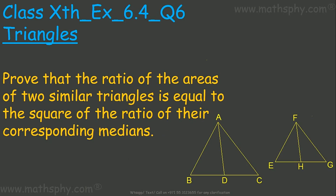This question says: prove that the ratio of the areas of two similar triangles — meaning ABC is similar to FEG — is equal to the square of the ratio of the corresponding medians. It says AD and FH are the medians for triangles ABC and FEG. So the ratio of areas of ABC and FEG, when those triangles are similar, is equal to the square of the ratio of the corresponding medians.